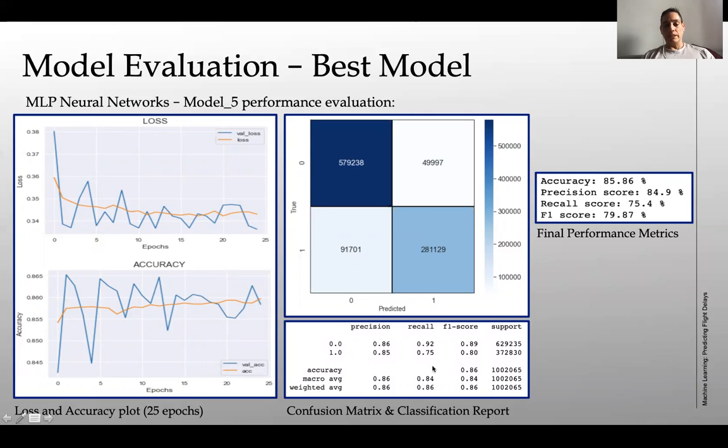You've got the confusion matrix here, and then the classification report. And this is the final performance metrics for what I'm trying to predict, which is my one, which is a delayed flight.